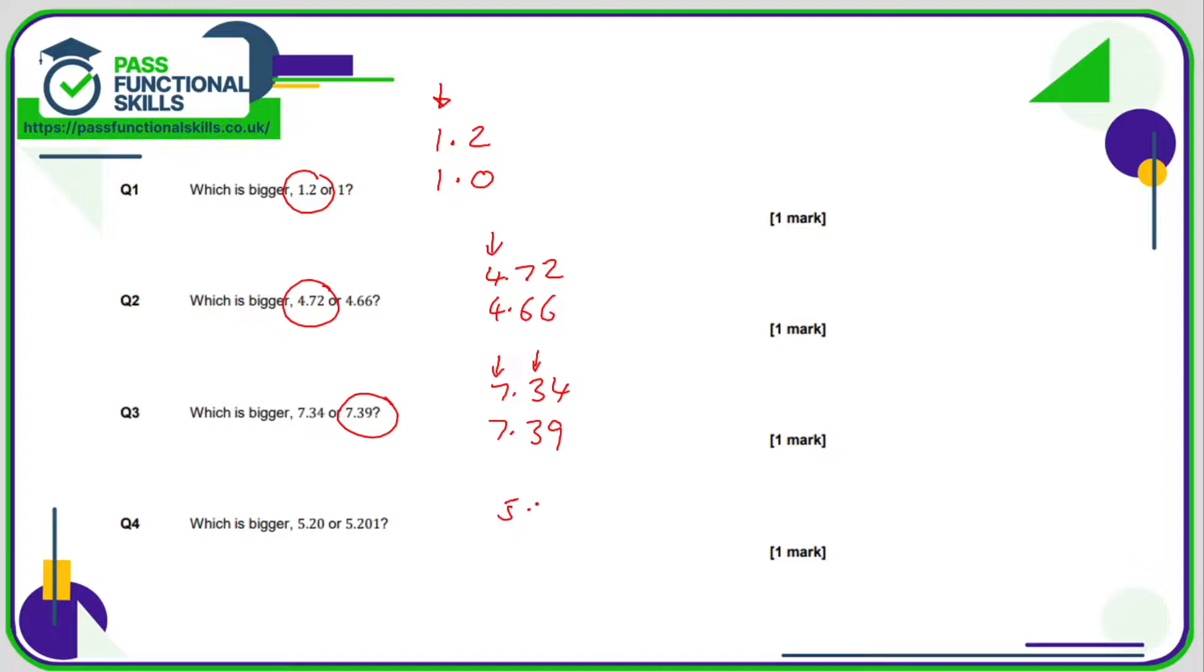Question number 4, 5.20 or 5.201. Now when you're comparing decimals that are of different lengths you might want to fill any blanks with a 0. This makes it much easier. All is equal in the units, tenths, and hundredths. But now in the thousandths, 1 is bigger than 0. Therefore 5.201 is bigger than 5.200 or 5.20.